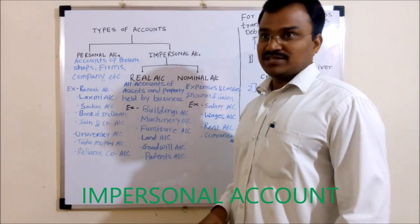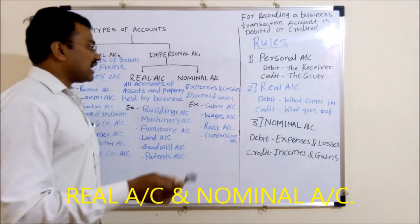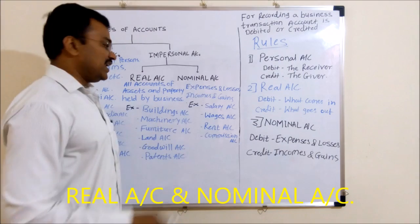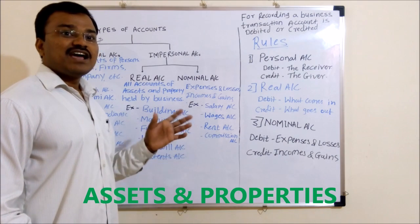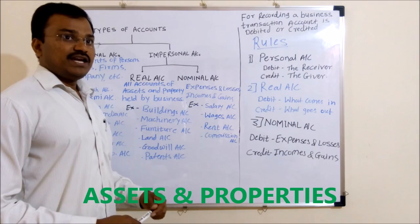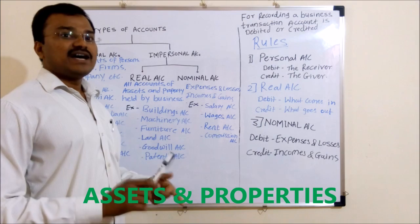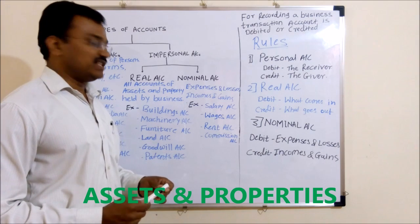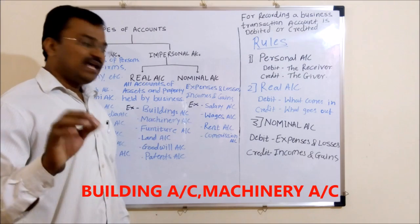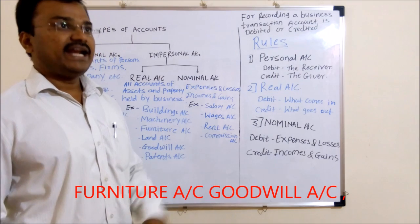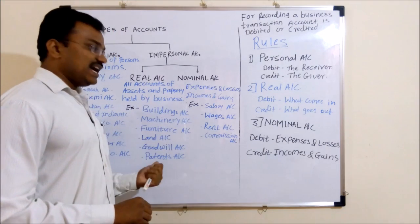Second type is impersonal account. Impersonal account includes two types of accounts — first one is real account and second one is nominal account. Real account includes all accounts of assets and properties of the business. For example, building account, machinery account, furniture account, land account, goodwill account, patent account, copyright account, trademark account, etc.